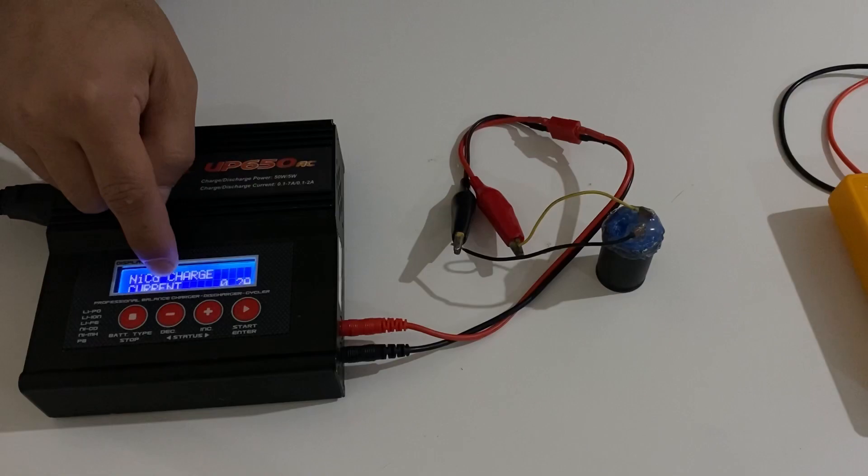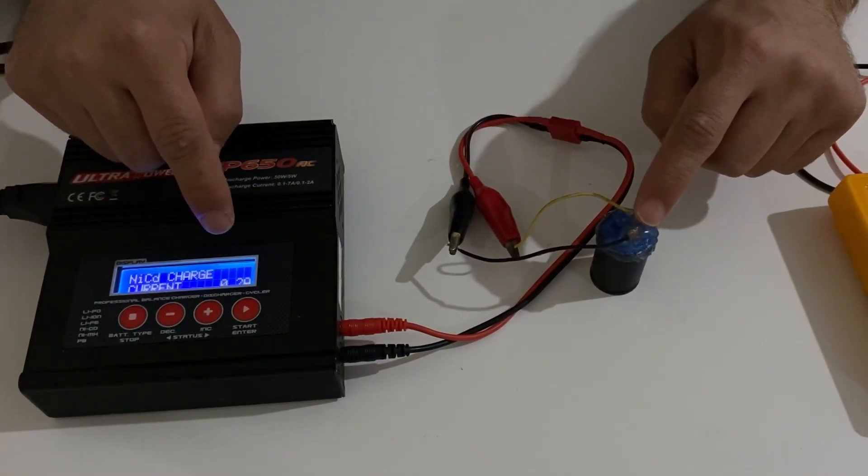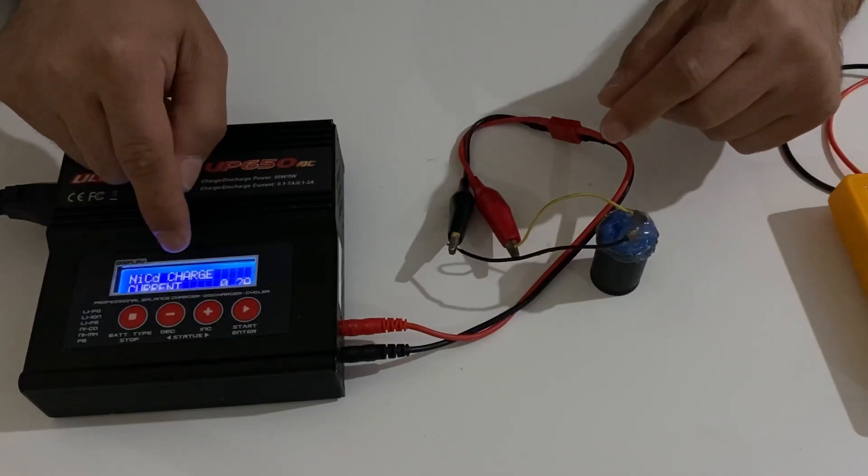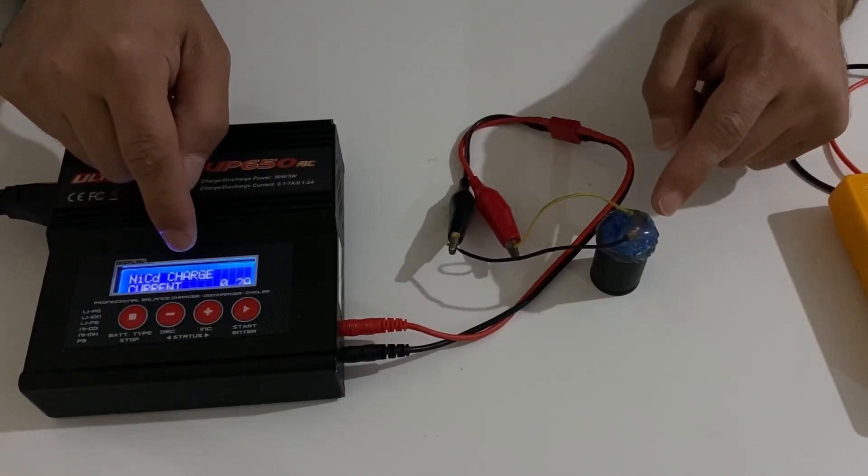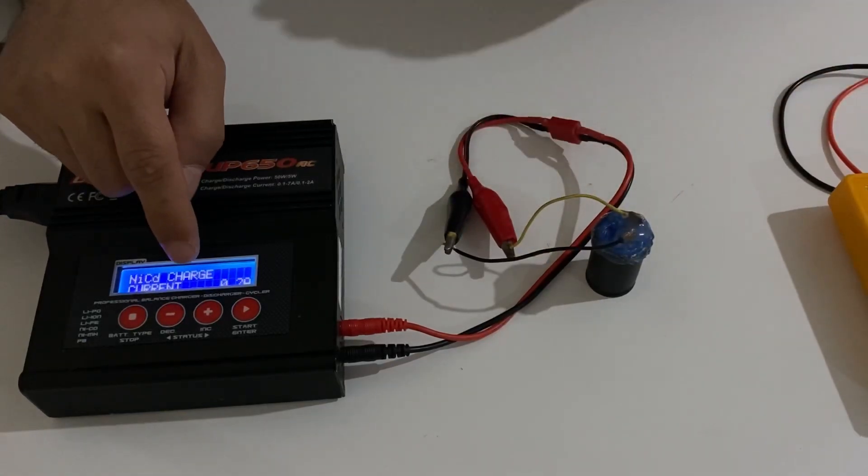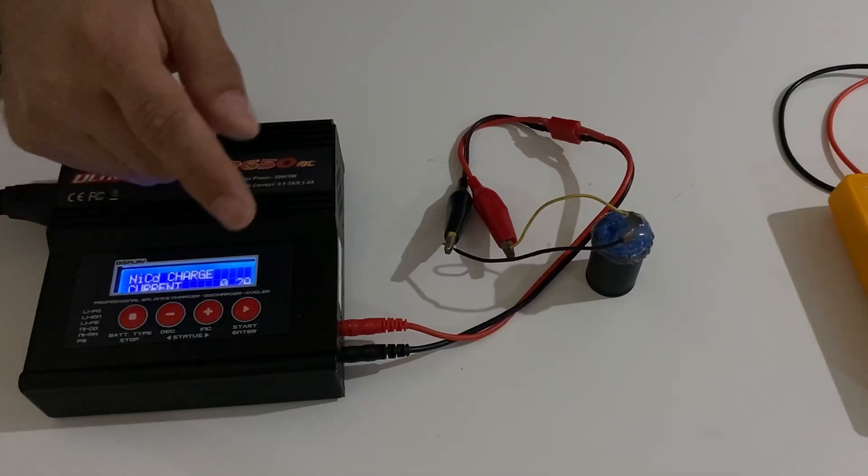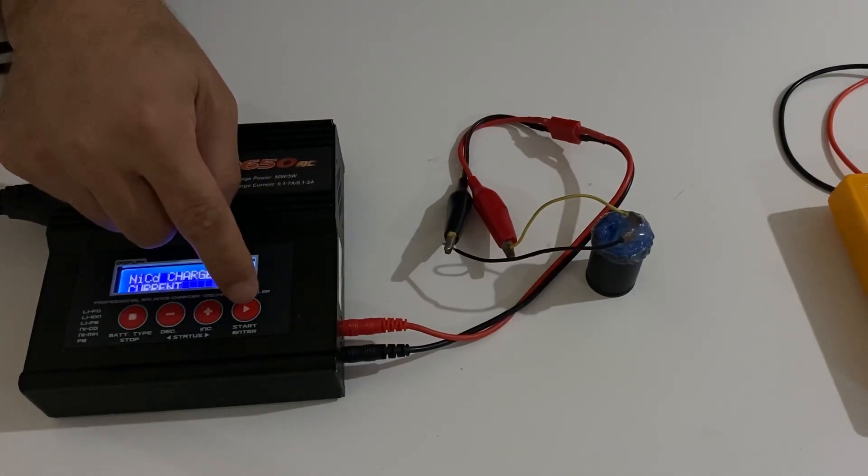When it becomes 1.7V, our capacitor will charge up to 1.4V. So I need 1.7V to charge my supercapacitor up to 1.4V. Okay, I will just start it and see what it is. Let's see how many minutes we need to fully charge our supercapacitor.